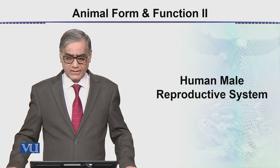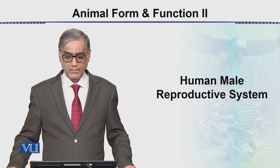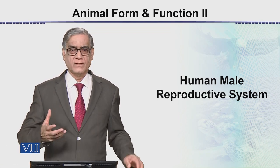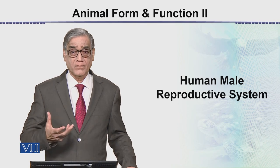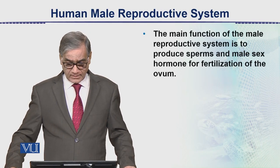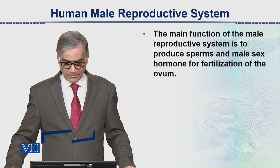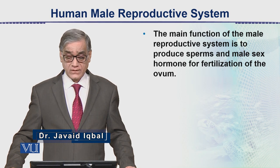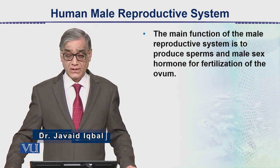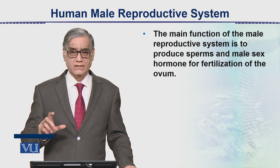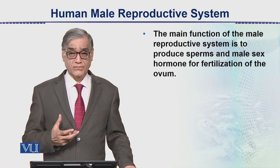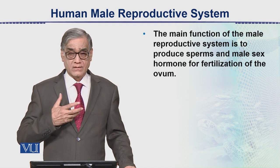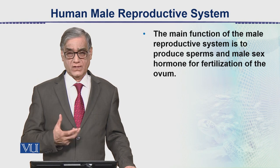Next topic: the human male reproductive system. The main function of the male reproductive system is to produce sperms and male sex hormones for fertilization of the ovum. So these are the two main functions — sperm production and sex hormone production.